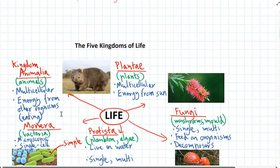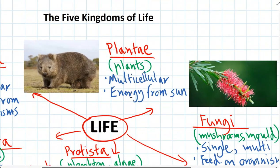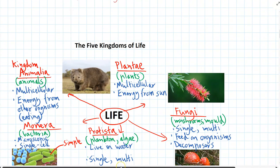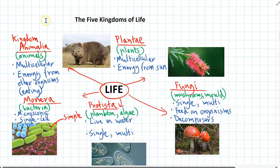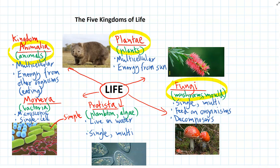Here are the five kingdoms, which is how we classify every species. Classification is a way for scientists to organize and group lots of different species based on their features, helping us learn how they evolved. The five kingdoms are Kingdom Animalia (animals), Kingdom Plantae (plants), Fungi (including mushrooms and moulds), Kingdom Protista (things like plankton and algae), and Kingdom Monera, which includes the bacteria and is the odd one out.